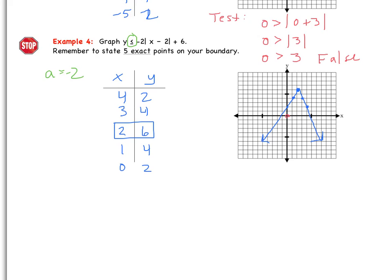If we notice, the point (0, 0) still is not on our boundary. So we can go ahead and test that point in the original to help figure out where we're going to shade. So is 0 ≤ -2|0 - 2| + 6. So 0 ≤ -2, that absolute value of -2 is going to go to positive 2 plus 6. 0 ≤ -4 + 6. And we get 0 ≤ 2, which is true. So we shade where that point is relative to our absolute value. That point (0, 0) is inside of our absolute value graph. So we're going to shade on the inside this time.